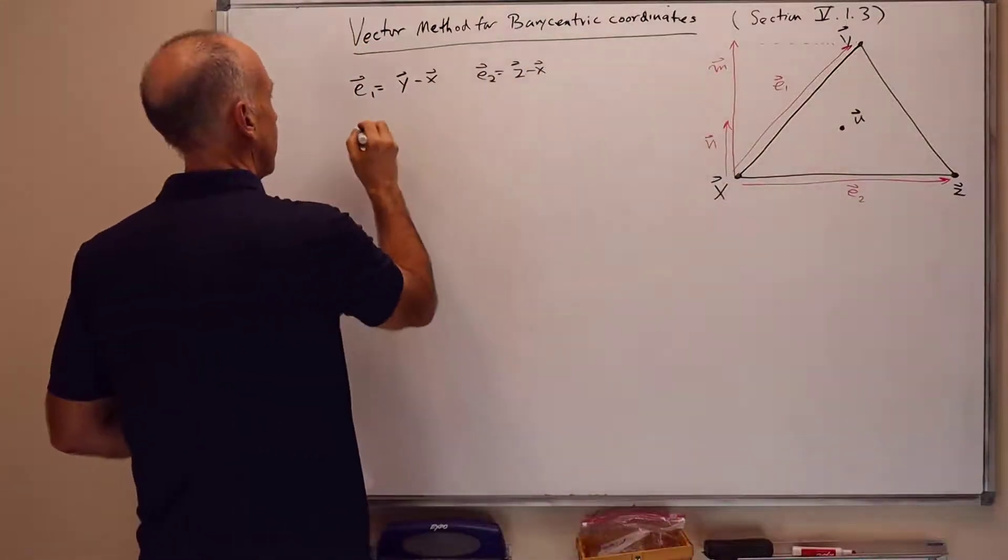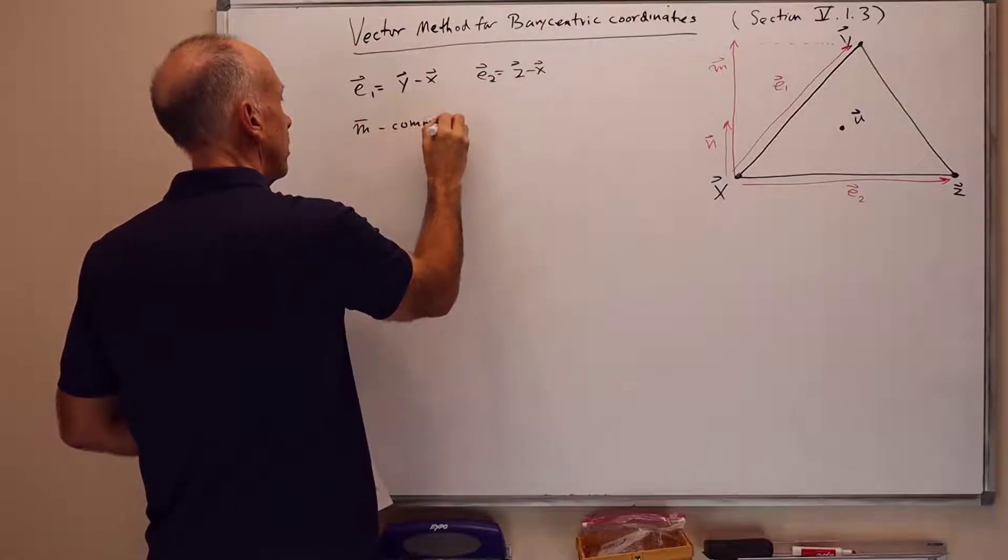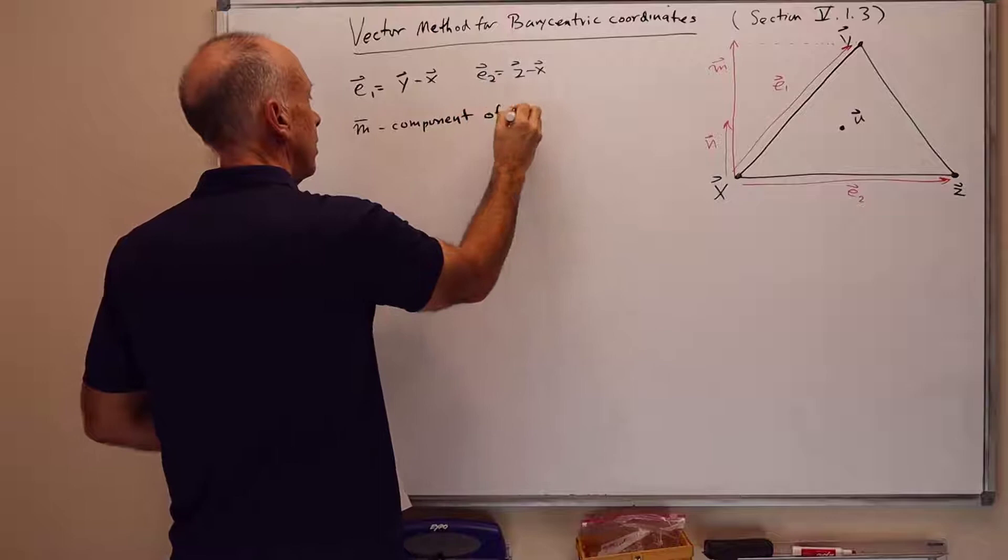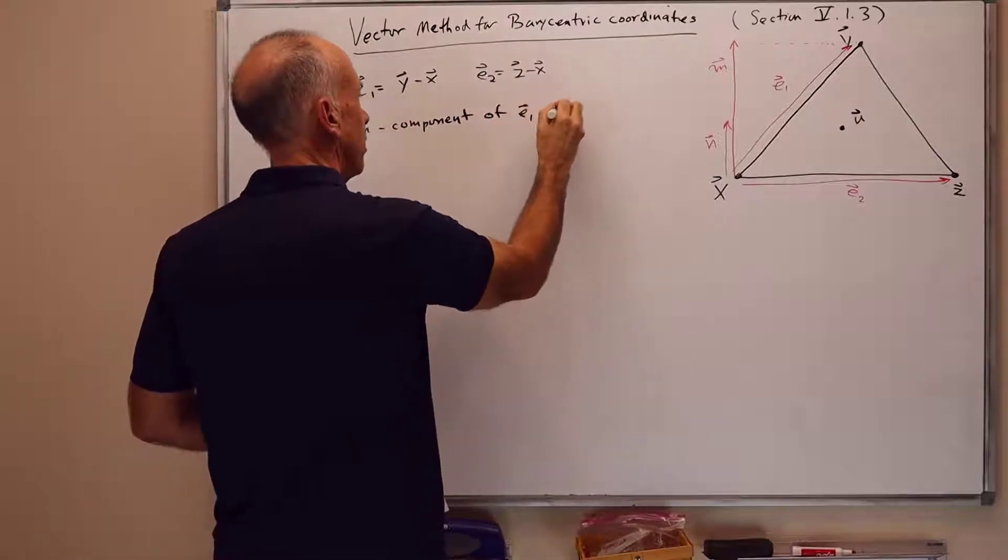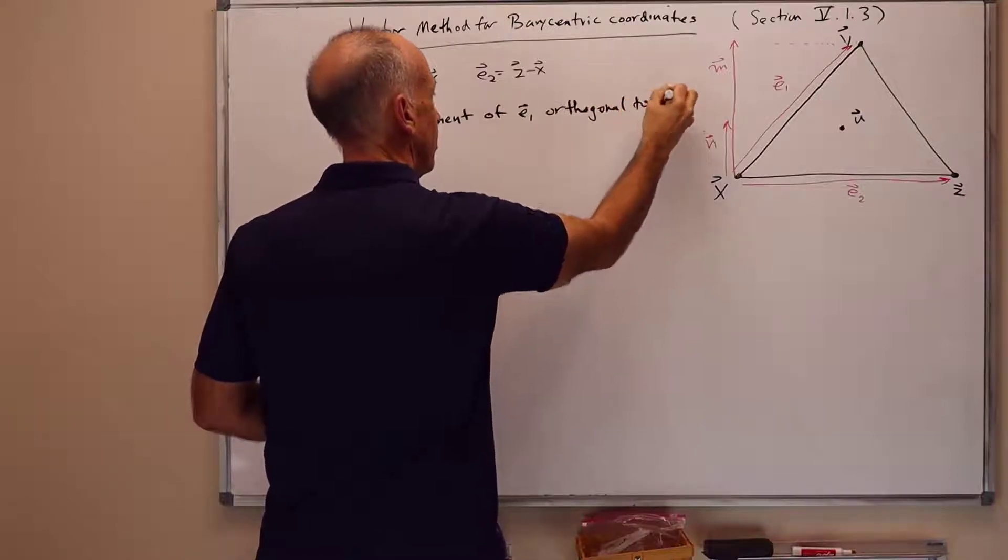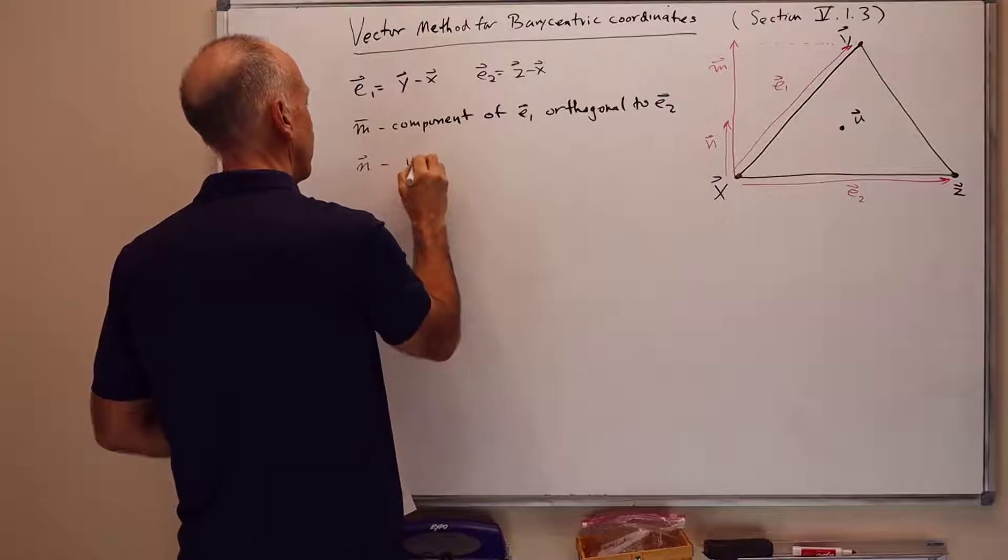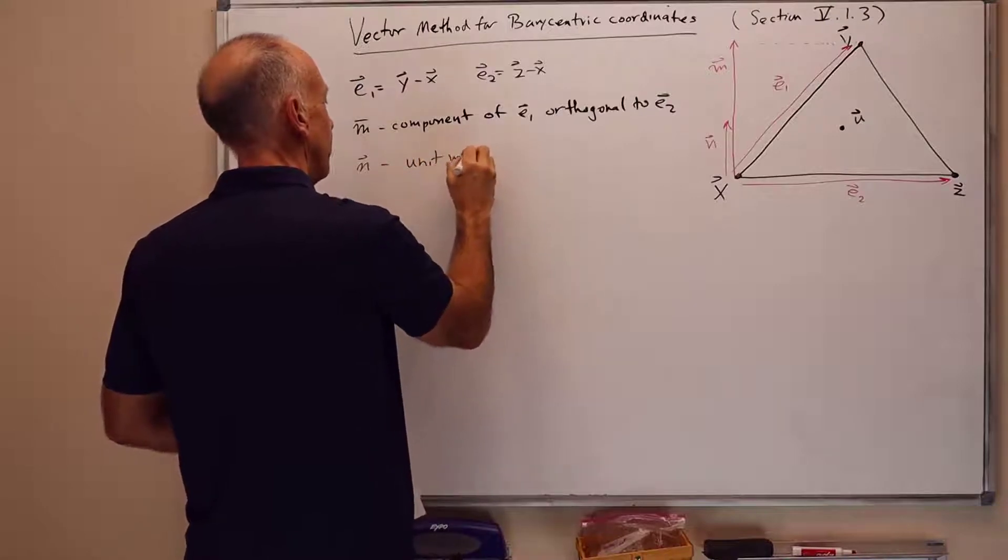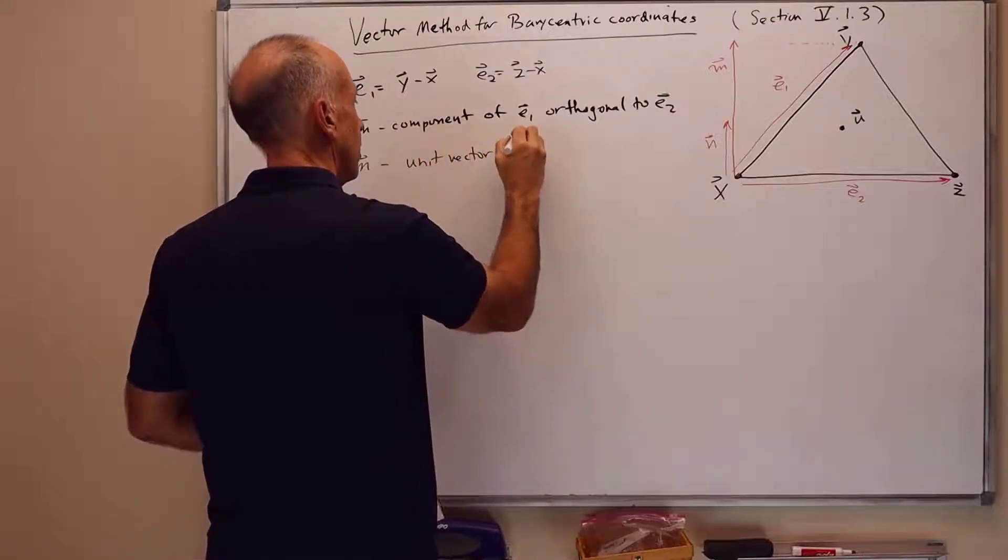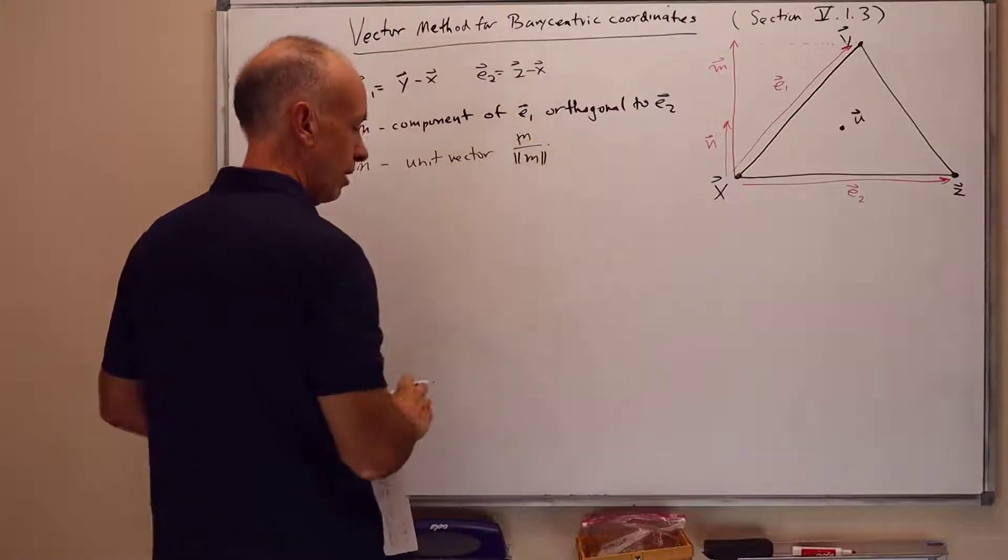And we'll also define the normal vector n pointing in that direction. So this gives us m is the component of e1 orthogonal to e2 and n is the unit vector in the same direction. So it's the unit vector m divided by the magnitude of m.